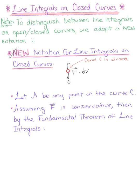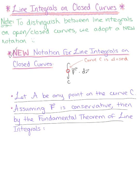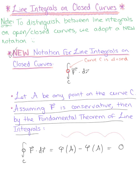Thinking back to our fundamental theorem of calculus, if we let A be any point on our closed curve C, and we assume that our vector field is conservative, then by the fundamental theorem of line integrals we can conclude that the integral over a closed curve C of this vector field dotted with dR equals the potential function evaluated at A minus the potential function evaluated at A, which equals zero. This is our first important property: the line integral of a conservative vector field over a closed curve is zero.